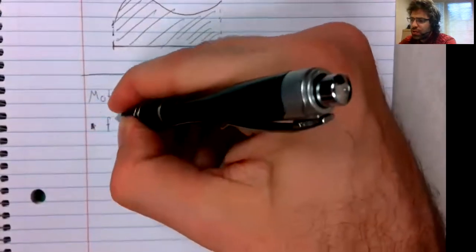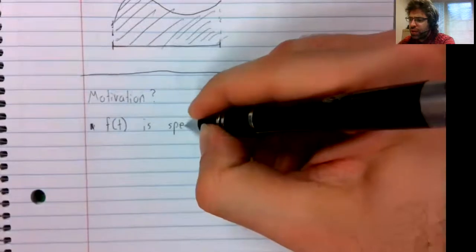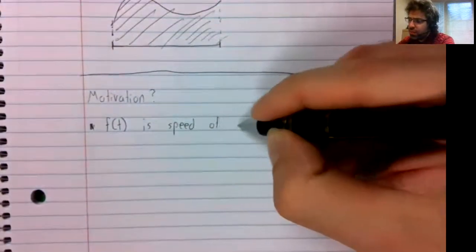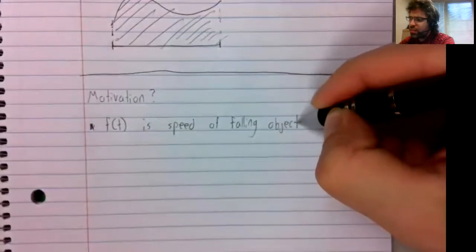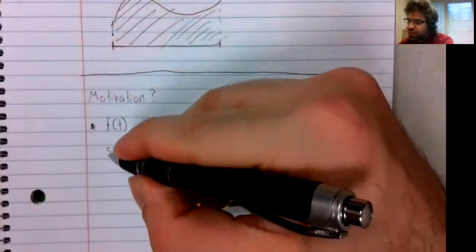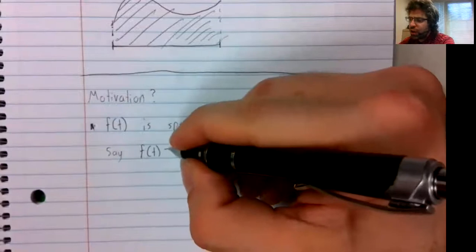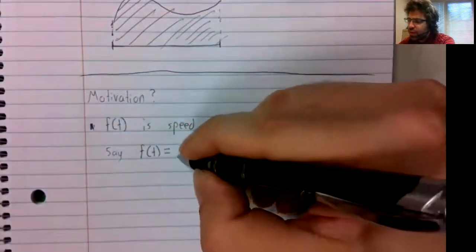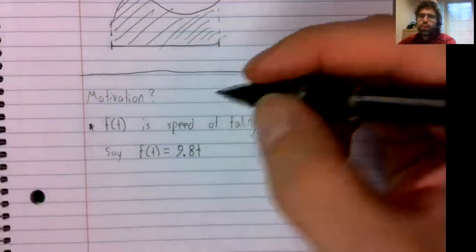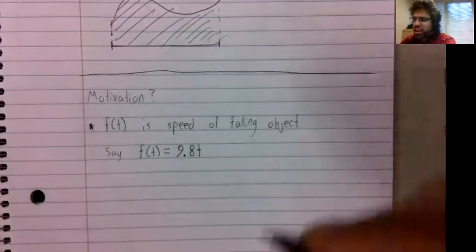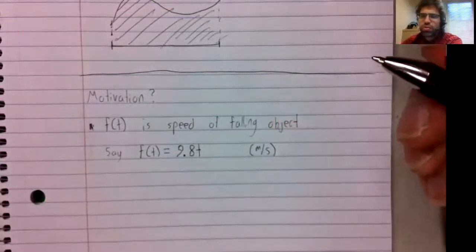Well, suppose that f of t is the speed of a falling object. Say, for example, that you would drop an object off a ledge without throwing it downwards or upwards. Its speed after t seconds is 9.8t meters per second.